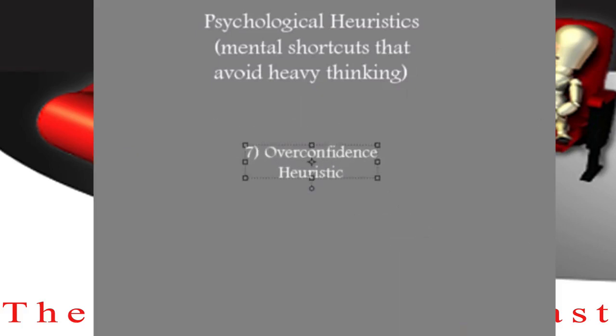Number seven is overconfidence. We like to be confident about our decisions. When we have difficult ones to make and we essentially take a guess, we're probably going to think, 'Well, I think that's right.' We might call that a self-serving bias as well, because you don't want to think you have absolutely no idea. You just said something, and you don't want to appear like an idiot, so you're likely to be unrealistically confident about what you've just said.